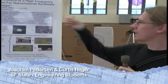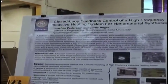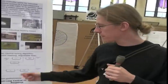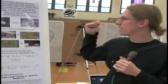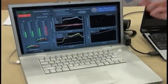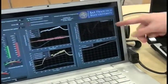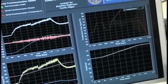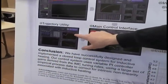My name is Joachim Peterson, and this is Curtis Hilger. We did the closed-loop feedback control of a high-frequency inductive heating system for nanomaterial synthesis. We developed an end-to-end control system for controlling the temperature of an inductively heated nickel heating disc. Controlling for temperature gets us better materials, faster, with more repeatability. This application here is what the user sees when they're running the system. This window right here is the input trajectory — this is where we want the temperature to go, input by the user at the beginning. It's designed using a trajectory utility application where the user can specify and save that file.